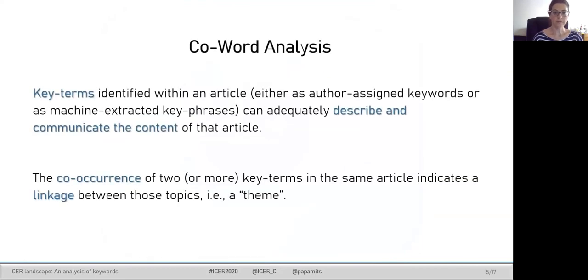To perform the mapping of the field, we apply co-word analysis. Co-word analysis rests on the assumption that key terms identified within an article adequately describe the content. The co-occurrence of at least two key terms indicates a linkage between topics—a theme. Co-word analysis is applied to reduce the broad network of key terms into a smaller network of related topics using graph theory.